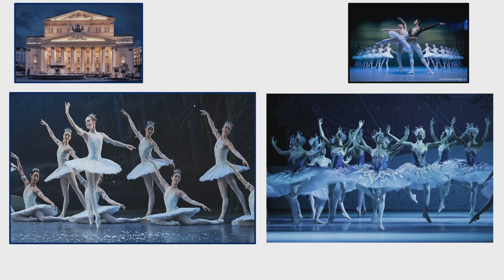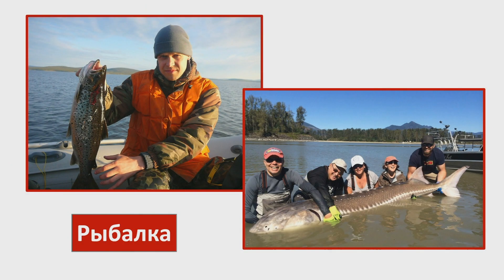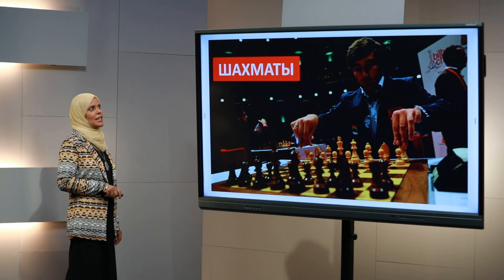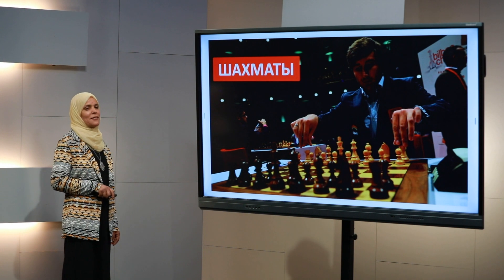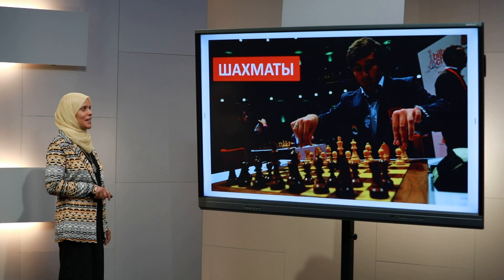Многие русские люди очень любят спорт. Они занимаются разными видами спорта: футболом, хоккеем, теннисом и так далее. Эта спортсменка любит плавать. Они любят кататься на лыжах. А они ходят на стадион или в спортивные залы. В соревнованиях по теннису или фигурному катанию собирают много зрителей. Есть ещё и другие увлечения у русских: как балет, рыбалка, шахматы. Чемпионат России по шахматам известен во всём мире.